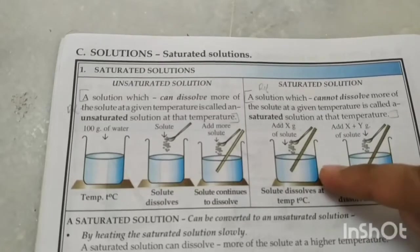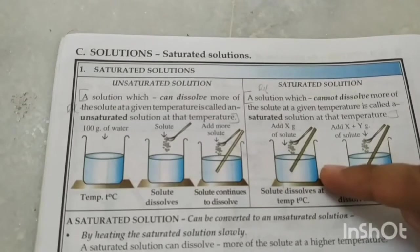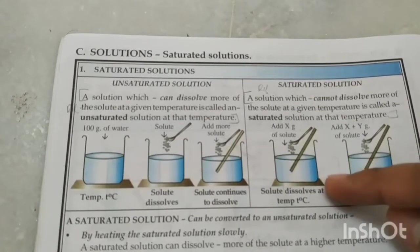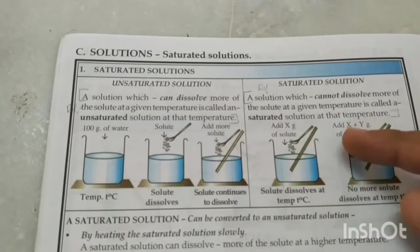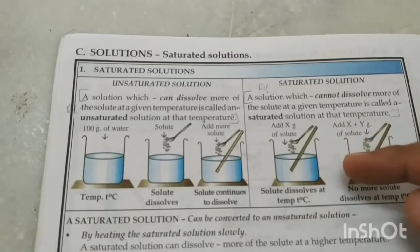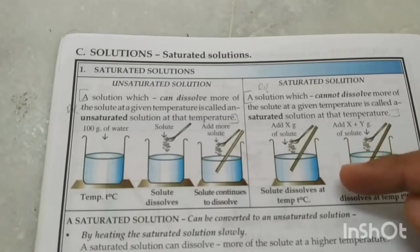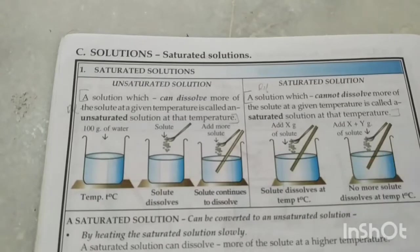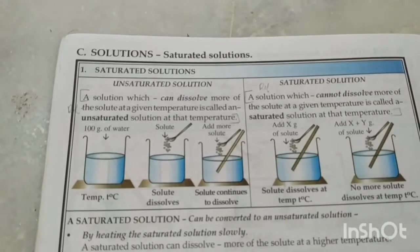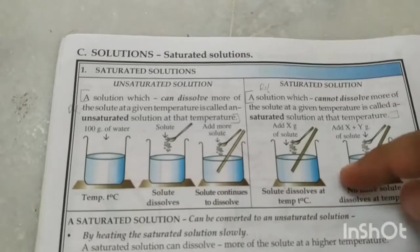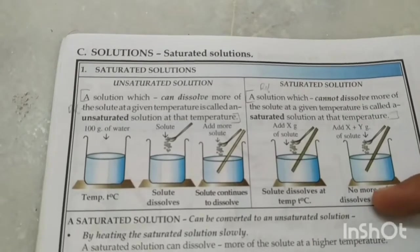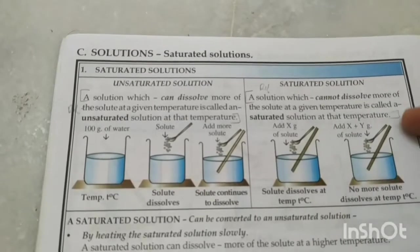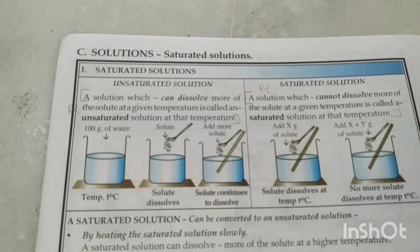If you have a saturated solution which cannot dissolve more solute and you heat it, then that hot solution will become unsaturated because at a higher temperature it can dissolve a few more spoons of salt. Another way to make it unsaturated is to add more solvent — that is, add more water to it.